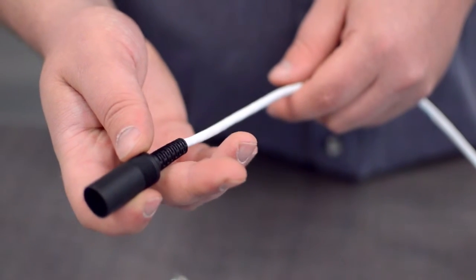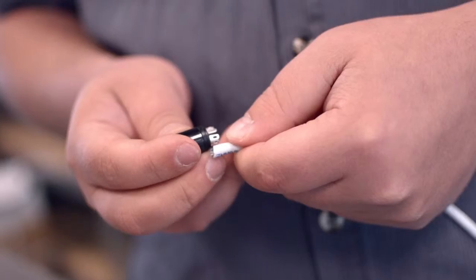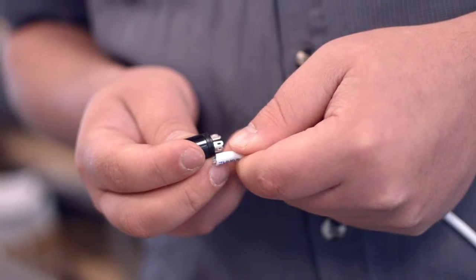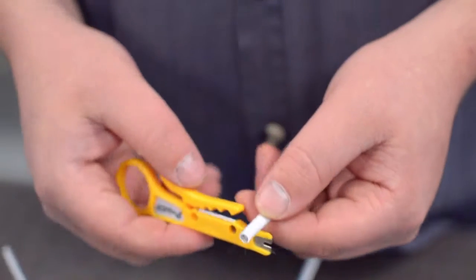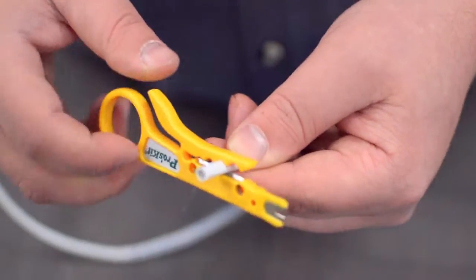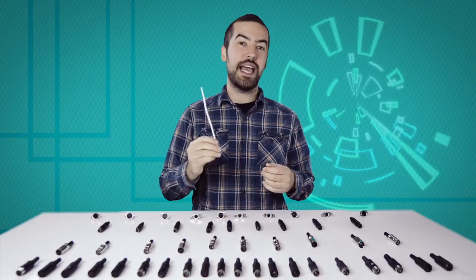Start by inserting the plastic boot over the jacket. Measure how far you will need to strip back the jacket by holding the cable up against the base of the connector. Then strip the cable jacket using the wire strippers. For this example we will be using cat 5e cable.